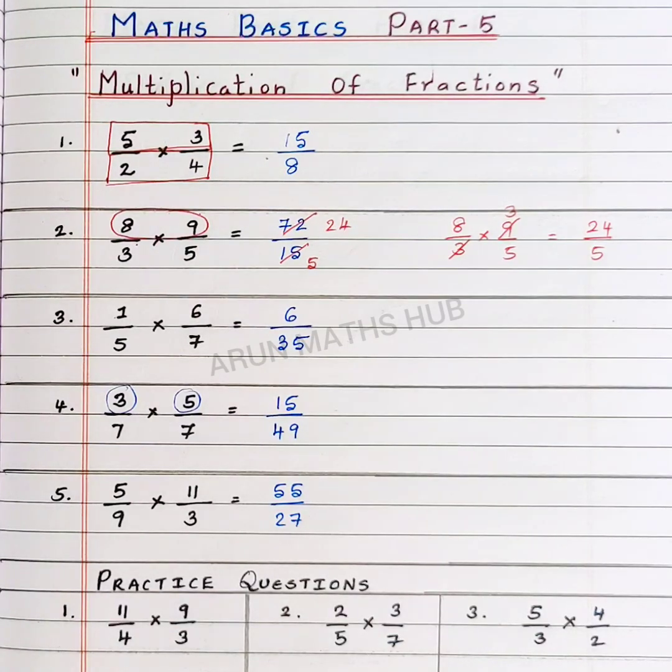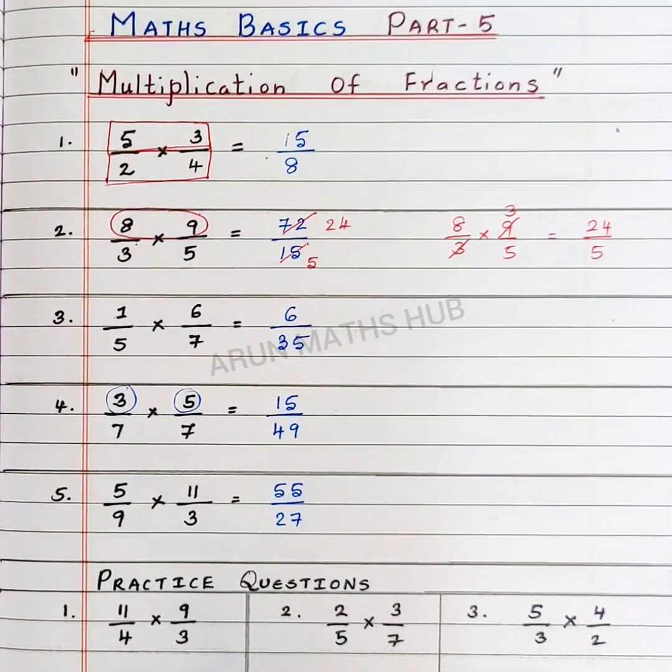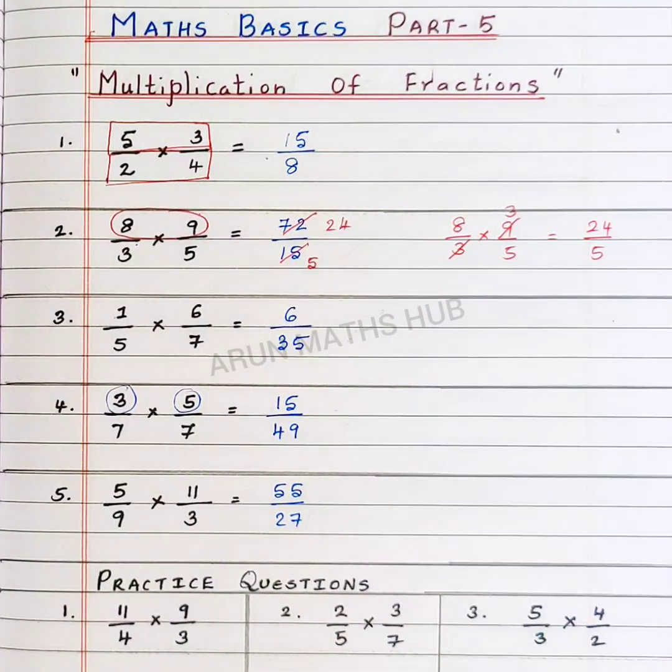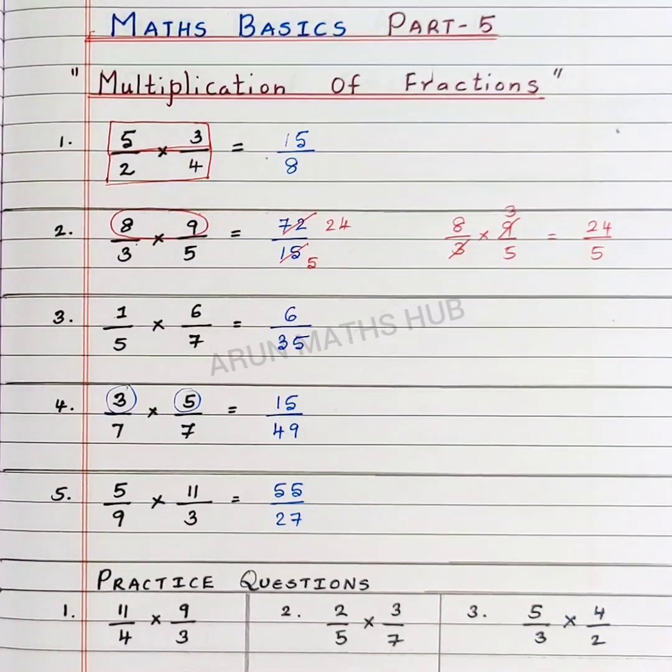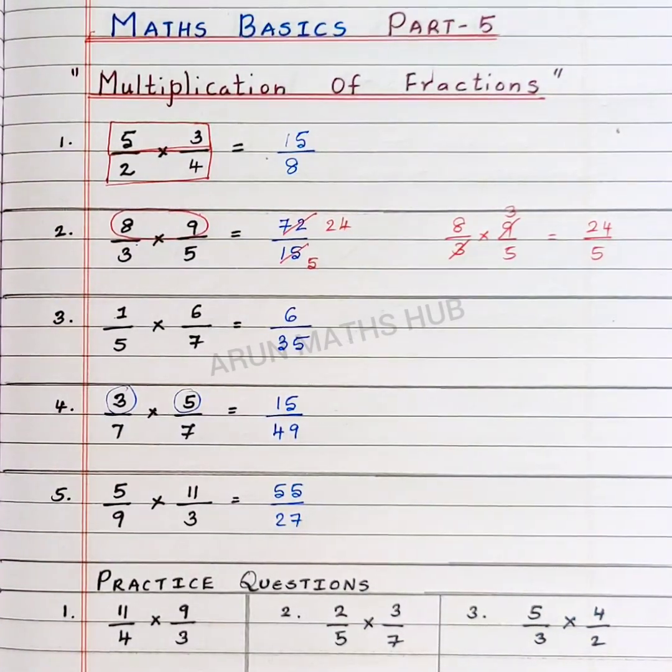Dear students, do practice these questions. First, you multiply directly, then you can simplify. Otherwise, if any common factor is there, you can simplify and you can multiply. In both the cases, you should get the same answer.